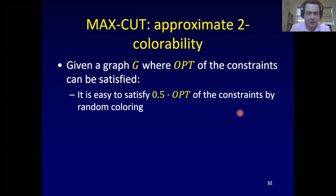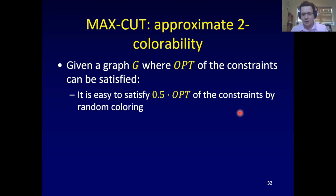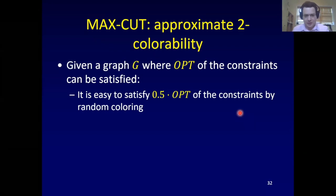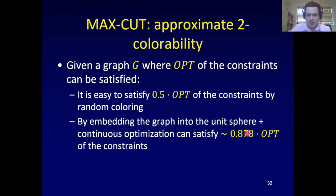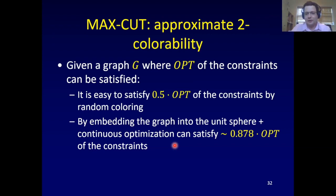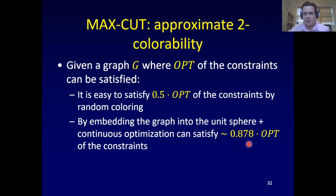If you just color vertices at random, about half the edges will be happy by dumb luck — that's an easy result. A highly non-trivial result is that you can actually get within about 88% of the optimal solution, by the clever algorithm of Goemans and Williamson. The idea is to represent vertices as vectors in a continuous space, do some clever geometry and continuous optimization, and get within 88% of the best possible value.